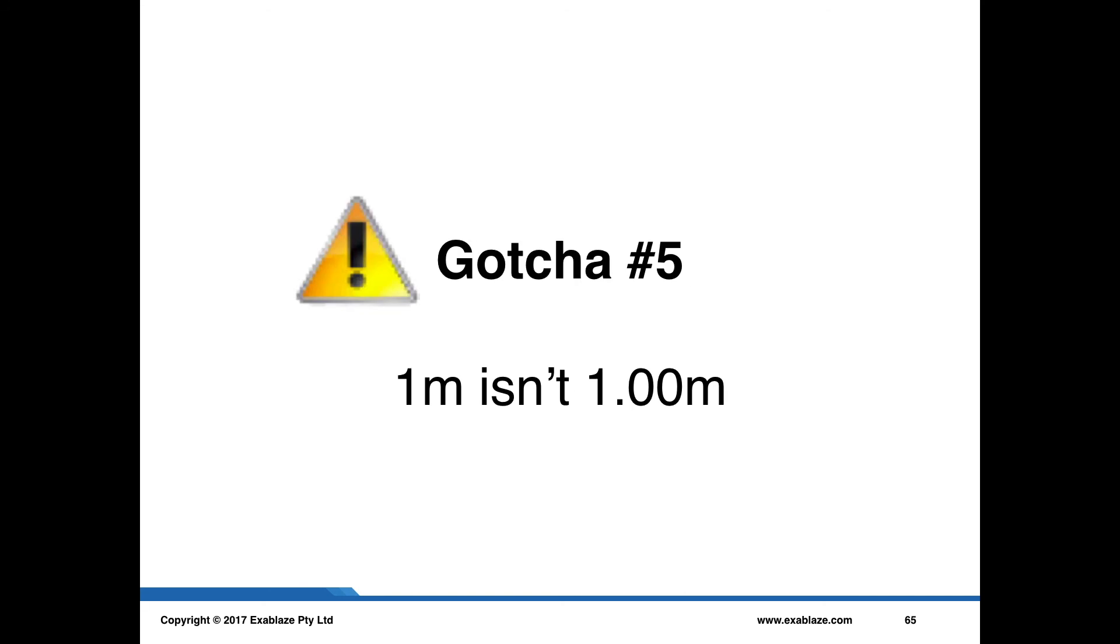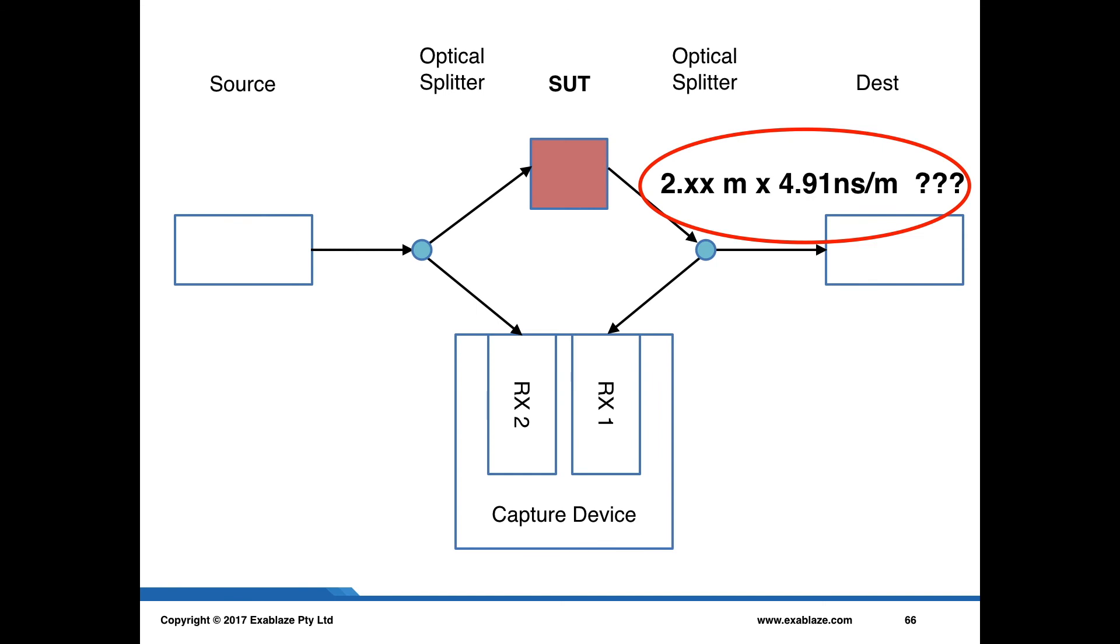This brings me to gotcha number five, which is that 1 meter isn't exactly the same as 1.00 meters. Looking at this measurement methodology, we're now in a bit of a difficult place. We have this propagation delay that we have to get just so right, and it depends on the particular type of copper or fiber that we're using. We also have to measure these lengths just right so that we don't incur extra delays or errors in our measurement as a result.